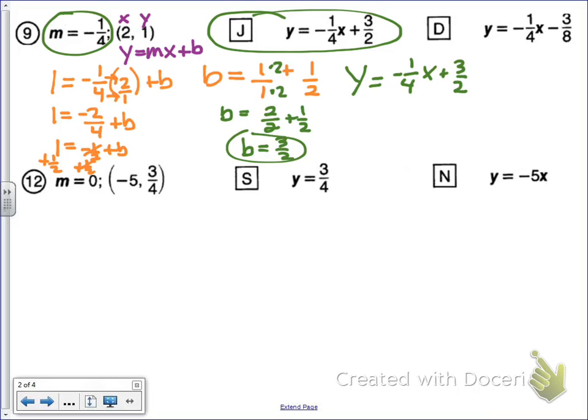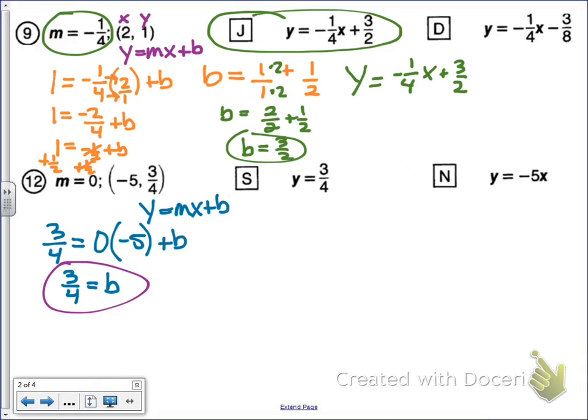Number 12: m is zero, and the point is negative five and three-fourths. Let's plug it into y equals mx plus b. I'm trying to figure out what b is, so we plug in y, m, and x to find b. Three-fourths equals zero times negative five plus b. What's zero times negative five? Zero times anything equals zero. So really all I have is three-fourths equals b. Well, that was easy. Let's plug the y-intercept and the slope into y equals mx plus b. I get y equals zero x plus three-fourths. Zero times anything is zero, even zero times a variable. So that literally goes away, and all I have left is y equals three-fourths. My answer is S.